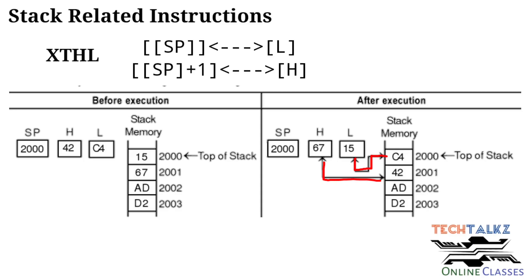After execution: address 2000 contains C4, and at the same time L register gets 15. Address 2001 contains 42, and H register gets 67.